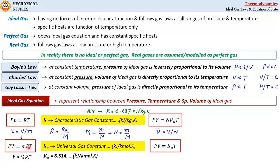All these four forms are different forms of the ideal gas equation. Take care: when you are considering mass of the gas, you use the characteristic gas constant R; and when you are considering number of moles of gas, you use the universal gas constant Ru. Please understand the difference and use of these constants in writing the expressions of the ideal gas equation.